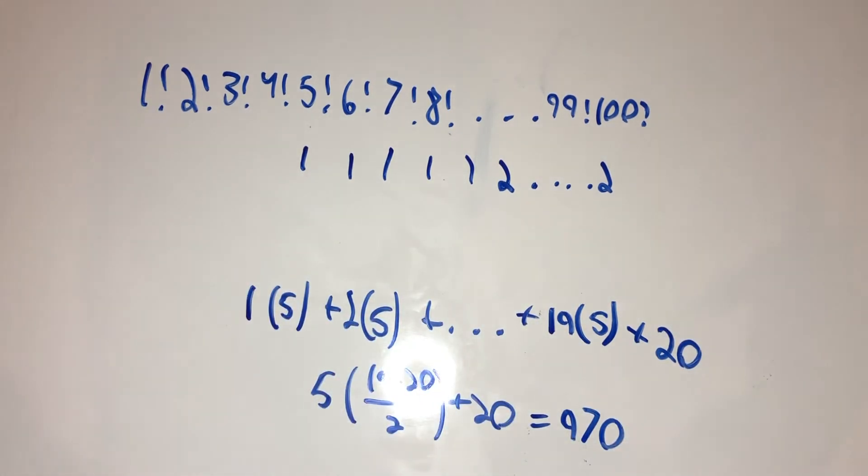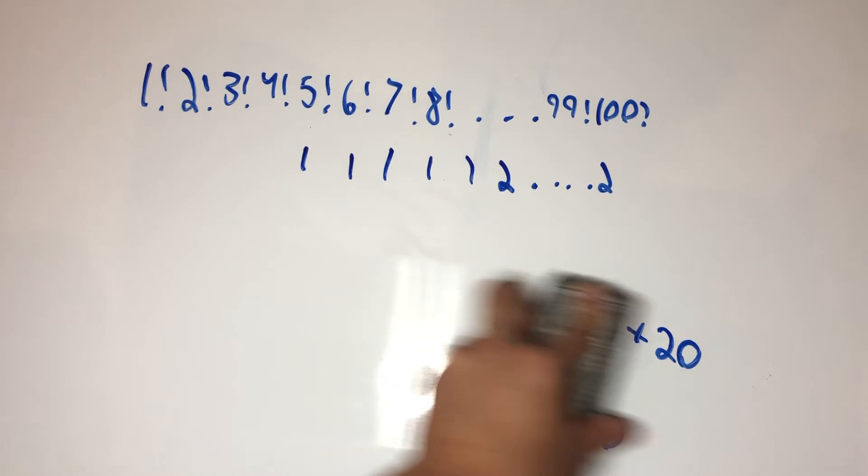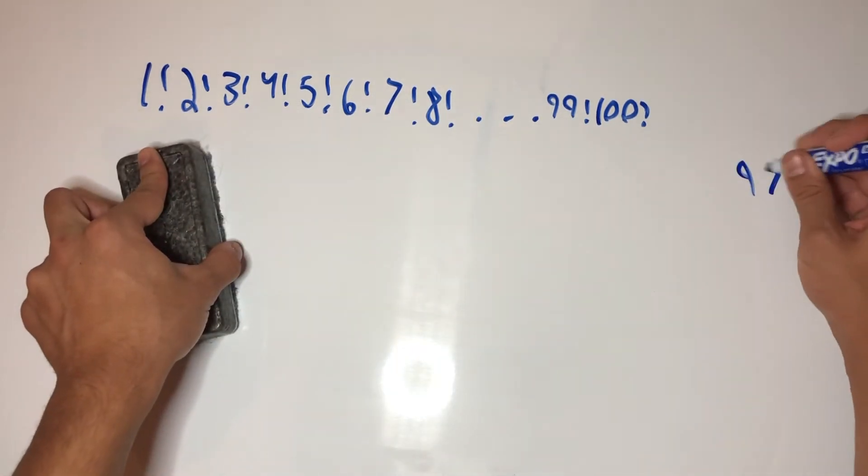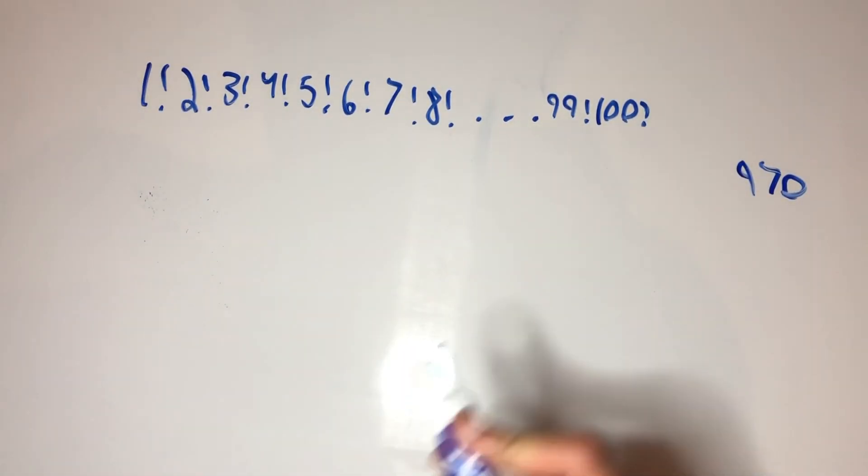However, we missed something. And that happens every time we reach something with a factor of 25, because 25 has two 5s. But we already counted one of those 5s, just doing the normal 5s. So, we only need to go back and just add one more for every 5. So, I'm going to move this 970 up here. And now, let's count for 25s.